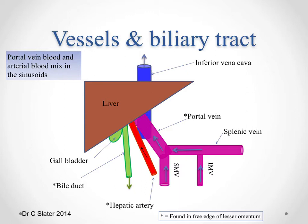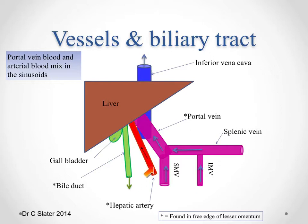There is the biliary system, which is responsible for storing bile and then sending it down into the duodenum at the appropriate times. There is the arterial blood supply — the hepatic artery proper — which has its origins from the celiac trunk, carrying oxygenated blood into the right and left lobes of the liver.